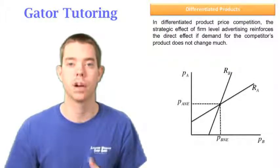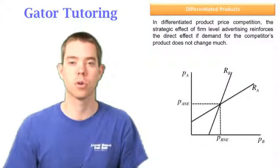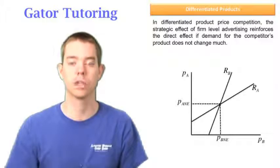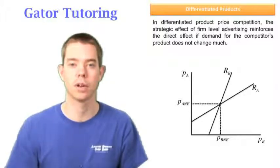We know that in price competition we have upward-sloping reaction functions. We don't want to memorize what advertising does as far as shifting the curves; we just want to think about it each time. We never want to memorize any curve shifts, we just want to think about it.